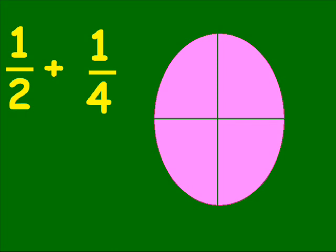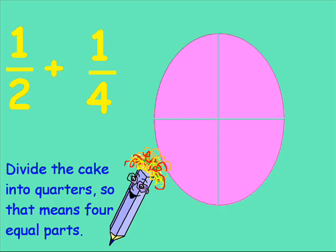When we look at a half plus a quarter, the first thing we can do is divide the cake into quarters. Divide the cake into quarters.